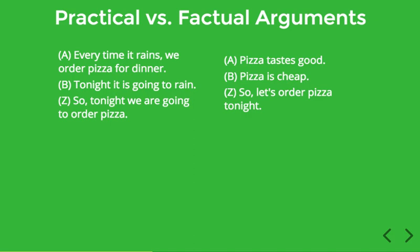If you believe that every time it rains we order pizza and you believe it's going to rain, then you simply have to believe that we're going to order pizza, or you won't be rational. That's not really the case for the second argument. You could believe that pizza tastes good and that pizza is cheap, but it wouldn't be totally irrational to not want to order pizza tonight. So the conclusion of the second argument is not entailed by the premises, whereas the conclusion of the first argument is entailed by the premises.